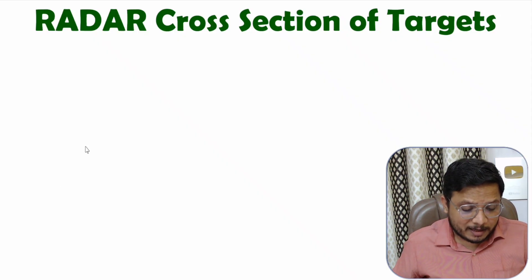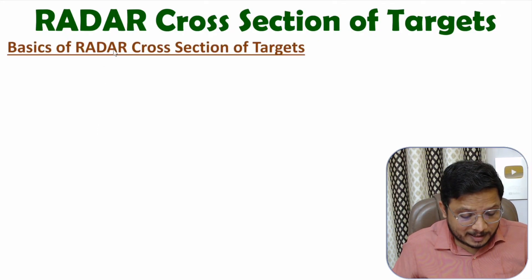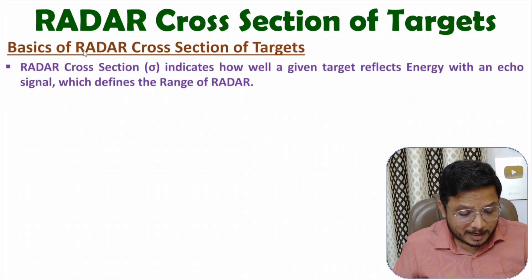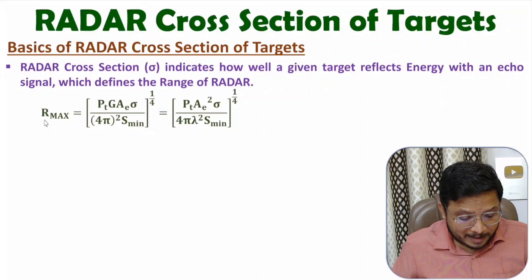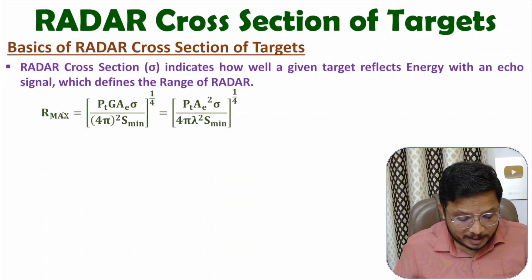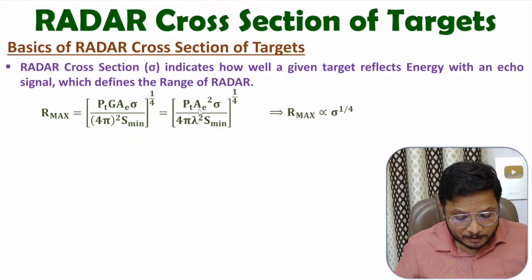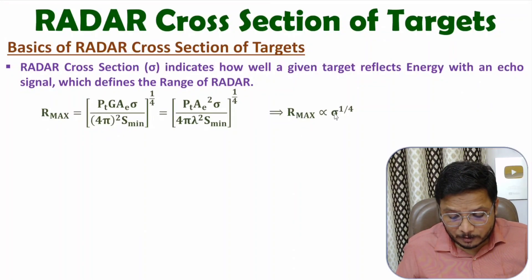In my earlier videos, I have derived the radar range equation. That radar range equation was based on cross section of target, which is sigma. If you calculate maximum range of radar, then that is purely based on this sigma. You can say maximum range is proportional to sigma to the power 1 by 4.